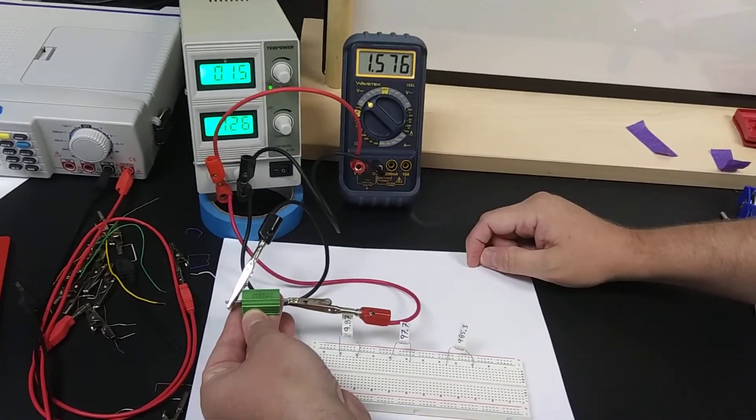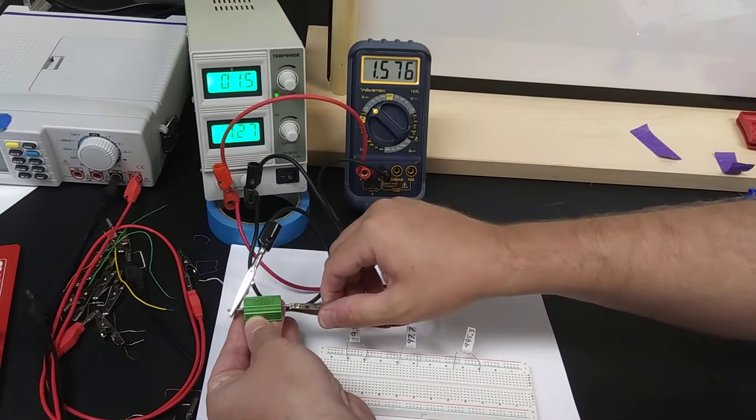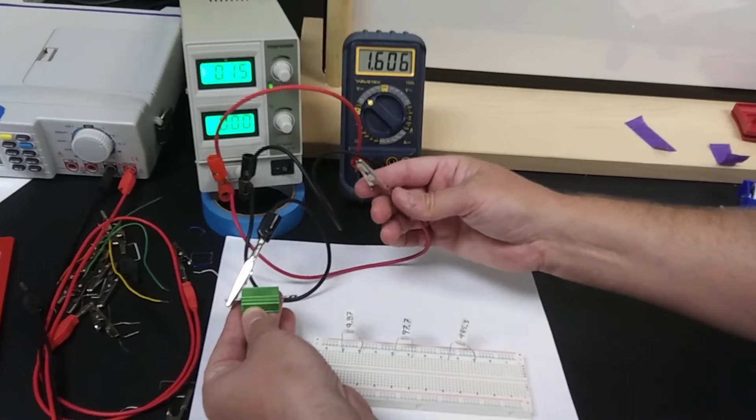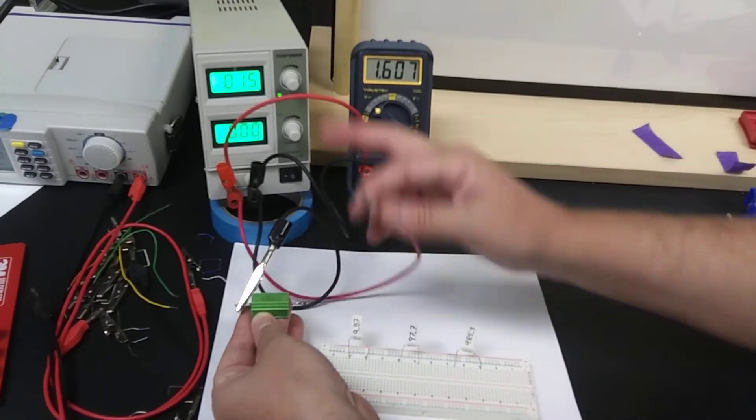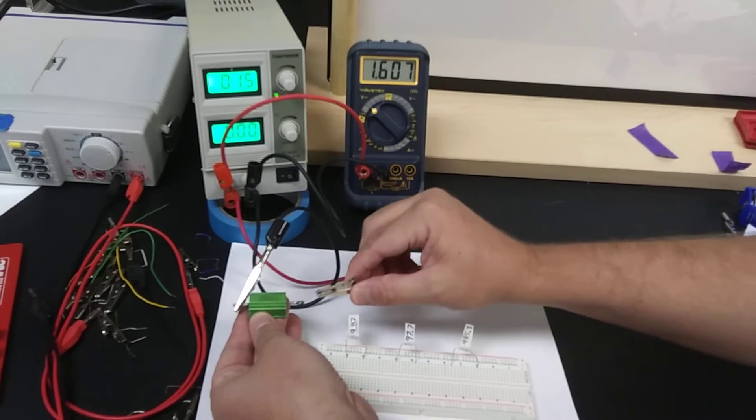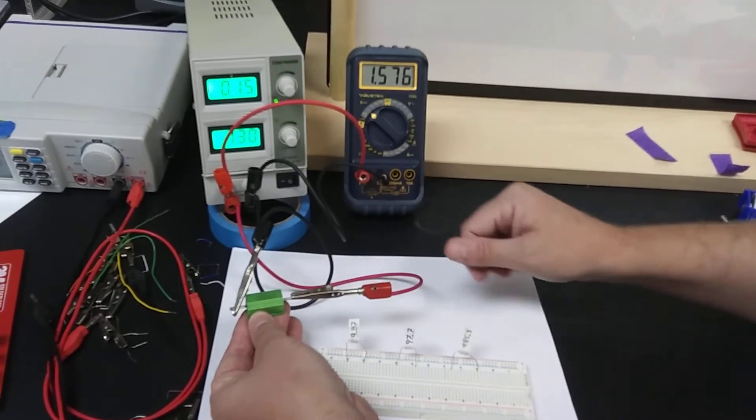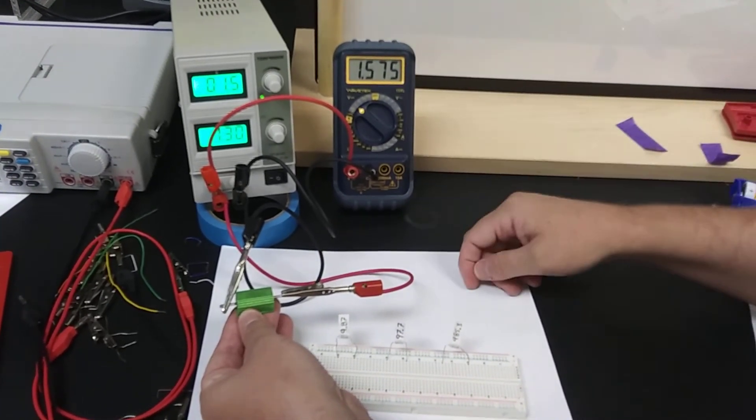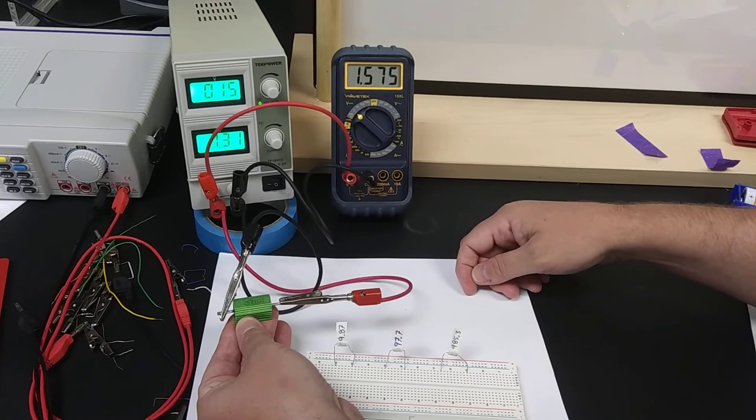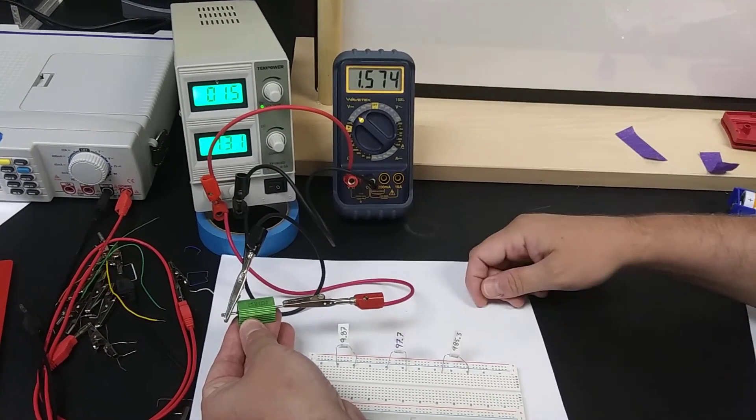Notice there's a dramatic change in this case. Again, the power supply says 1.07, then when I connect this there, we see that it's 1.75. Or you can read the dial. So that's it. Thank you.